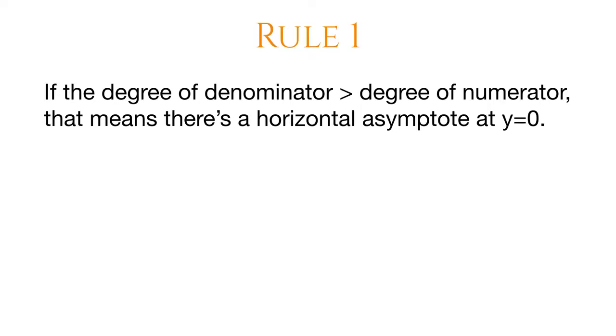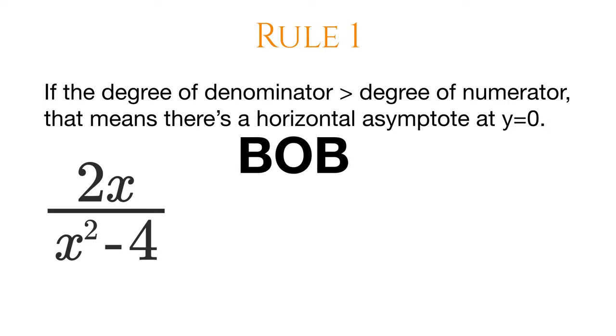Rule number 1. If the degree of the denominator is greater than the degree of the numerator, that means there's a horizontal asymptote at y equals zero. So here's an example. If you look right here, the degree of the denominator is two where the degree of the numerator is just one. That means denominator is greater than zero. So the horizontal asymptote would be y equals zero. And we have a rule for that and it's called Bobo. Bobo means bigger on bottom zero. And that is for when y equals zero.